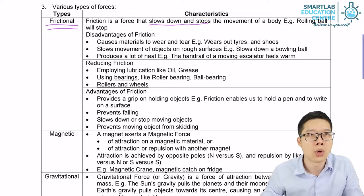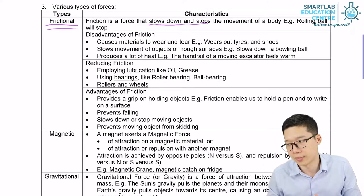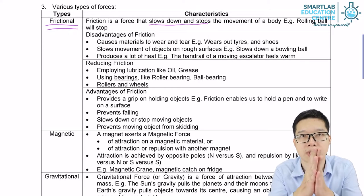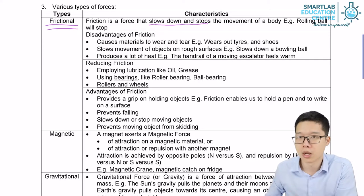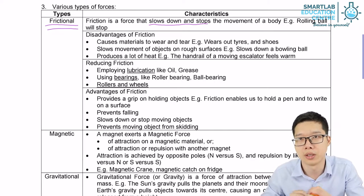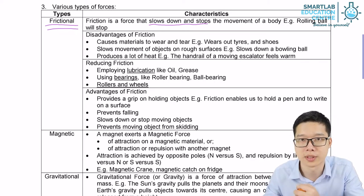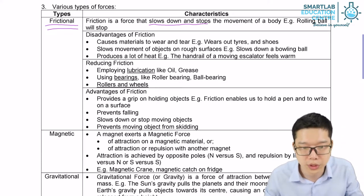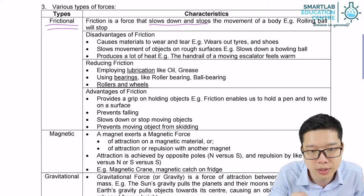Frictional force is a force that slows down or stops movement of the body. For example, while we are rubbing our hands, we are causing friction force on our palms. Or when we are stepping the brakes of a car, we are applying frictional forces on the wheels so that the motion can be slowed down. So that's frictional force.